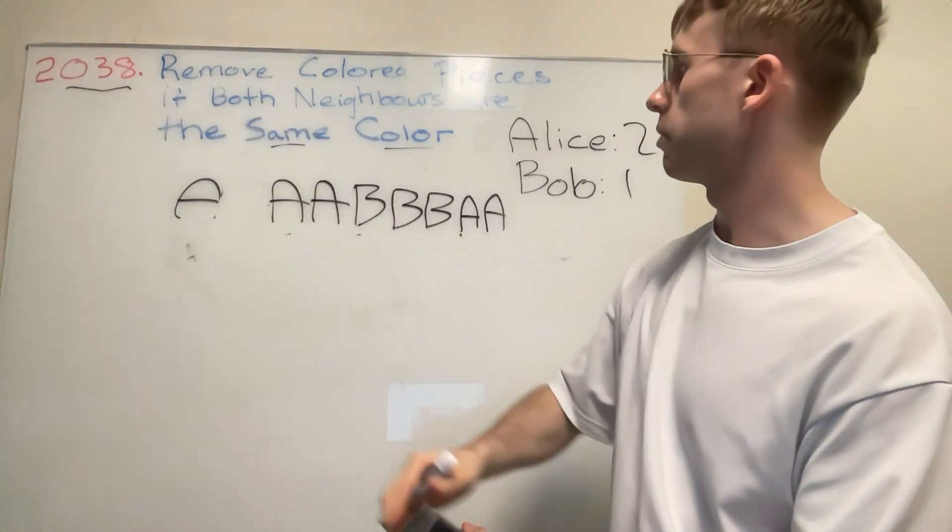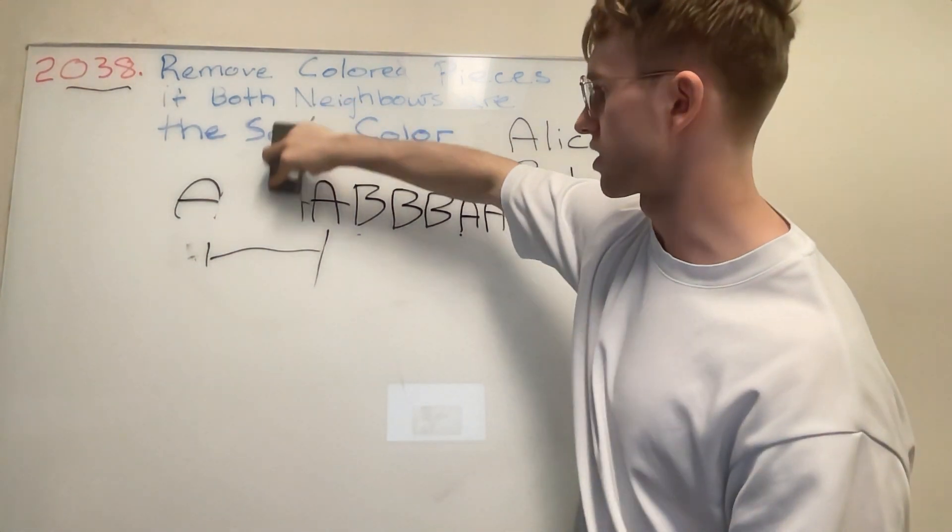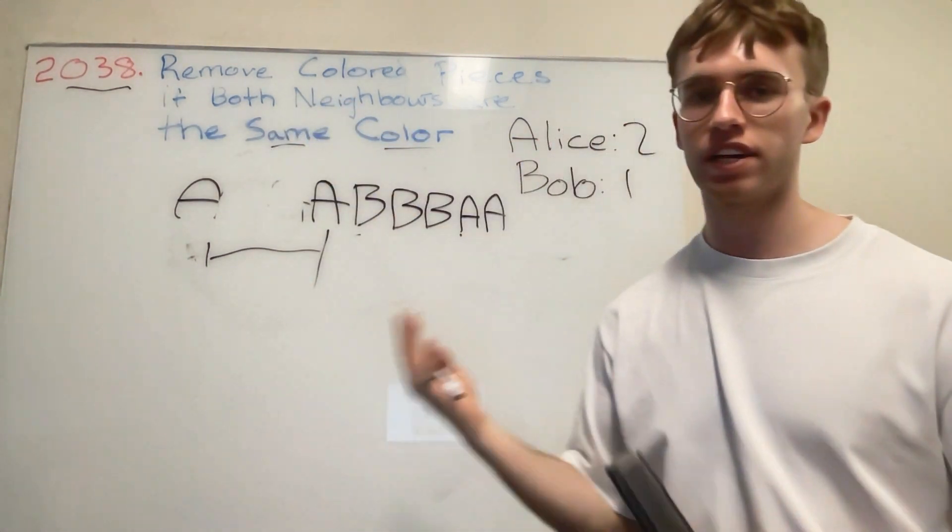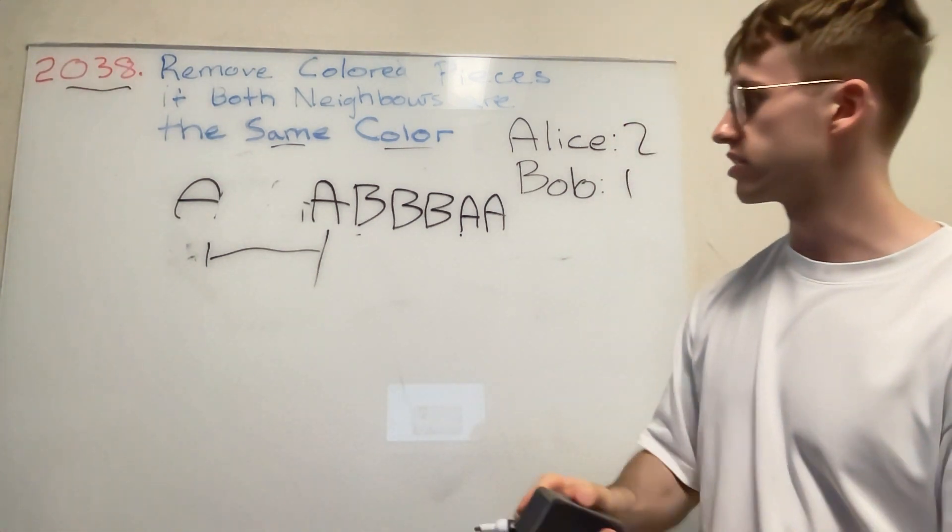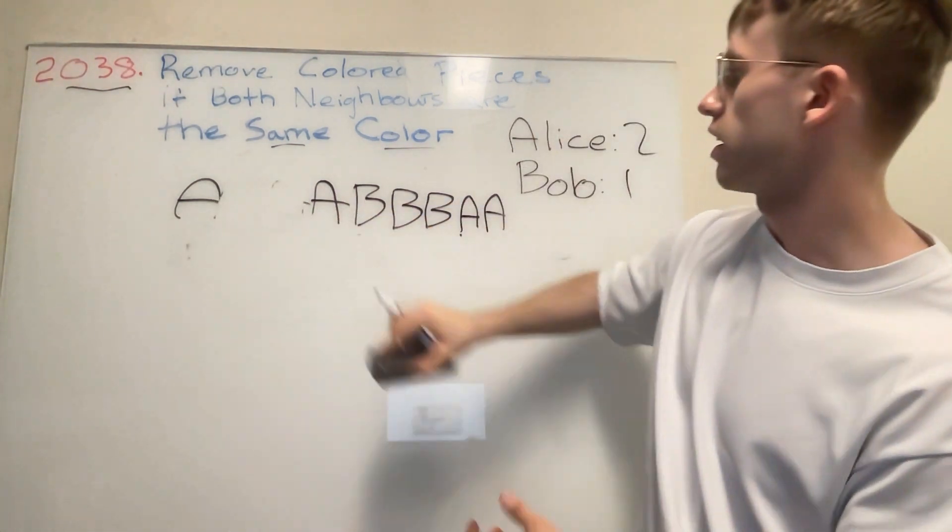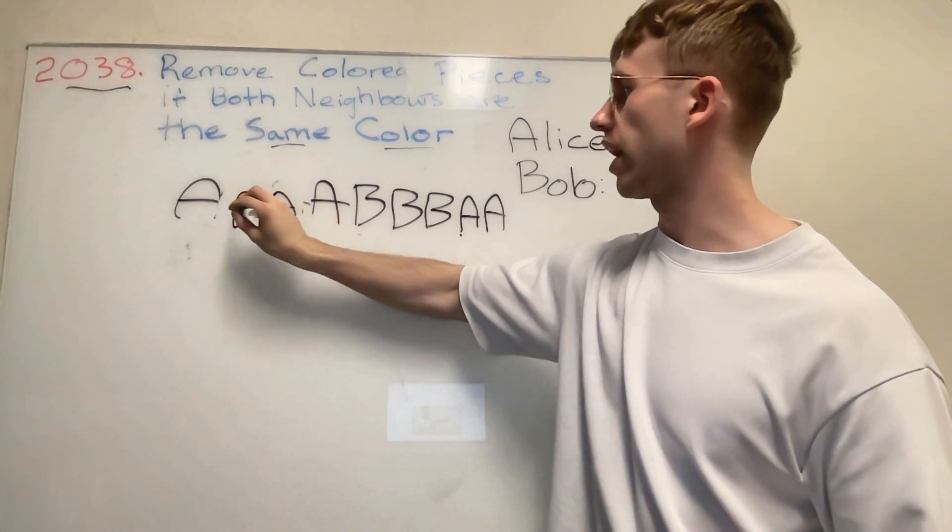It would be something like this, but then this is still three, so if you remove the middle one again, that's your second point. So you can actually get two points when you have four consecutive A's in a row. Let's just redraw those A's.